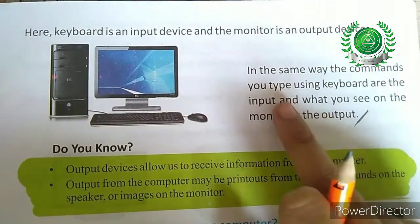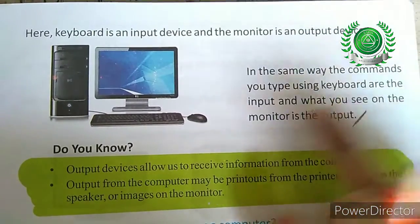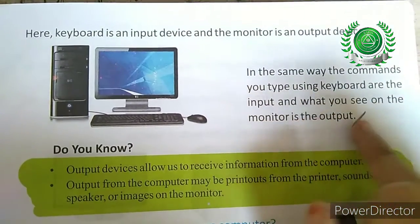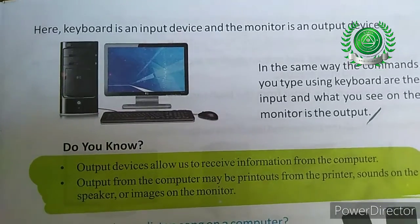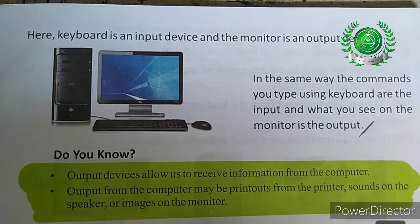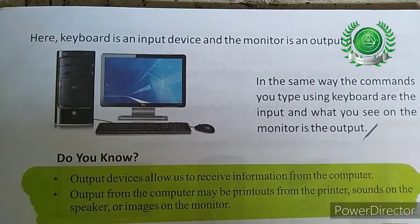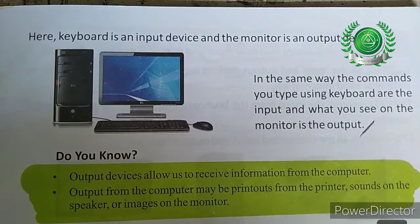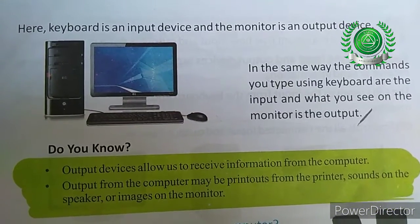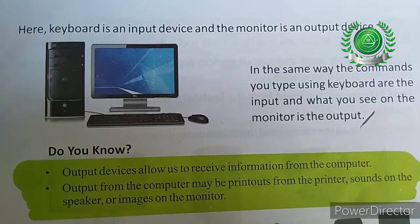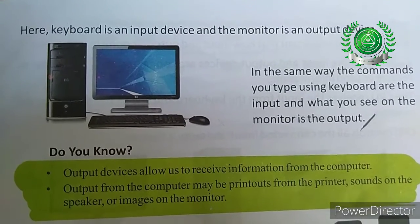In the same way, the commands you type using the keyboard are the input, and what you see on the monitor is your output. What you type on the keyboard — numbers, age, whatever you type — that is your input, and what you see on the monitor is your output.